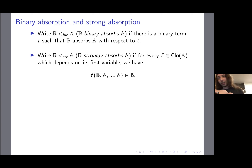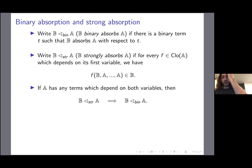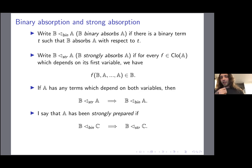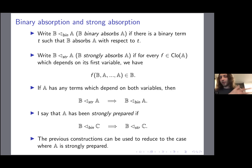Now, binary absorption vs. strong absorption. B binary absorbs A if there is a binary term T so that B absorbs A with respect to T. B strongly absorbs A if for every function in the clone depending on its first variable, plugging something from B in the first input always gives output in B. As long as the algebra is not completely trivial, strong absorption implies binary absorption. It would be nice to have a converse: an algebra is strongly prepared if every binary absorption is automatically strong absorption. The previous constructions can also be used to reduce to the case where A is strongly prepared.